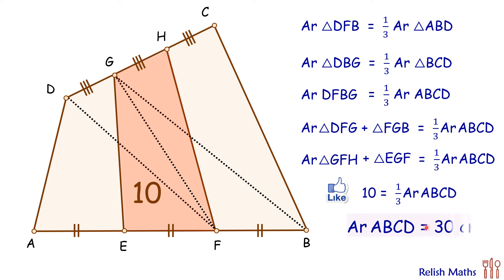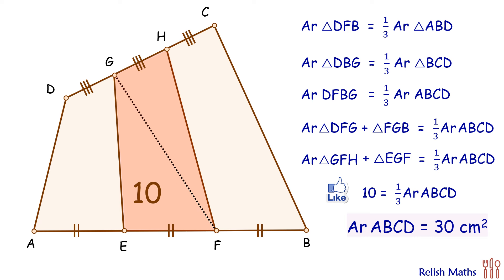Thus the area of quadrilateral ABCD is 30 cm², and that's our answer. I hope you enjoyed the solution. See you in the next video — till then, take care, bye!